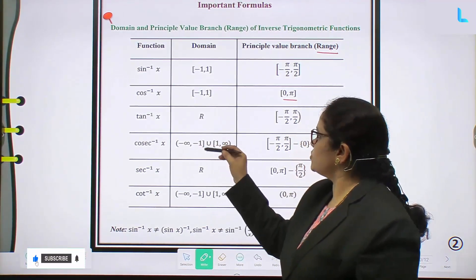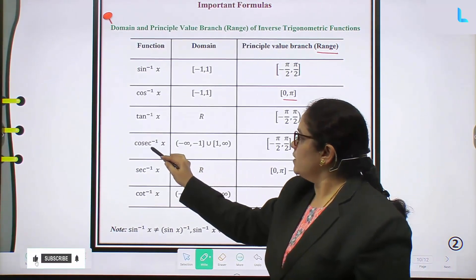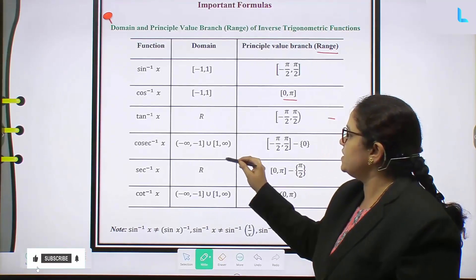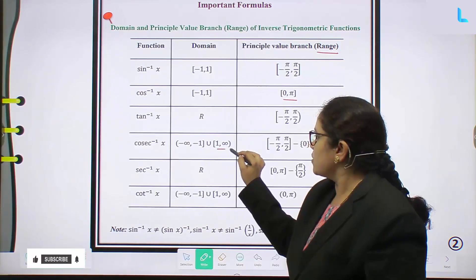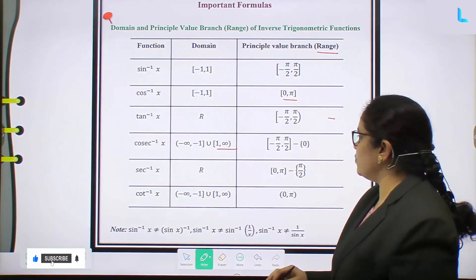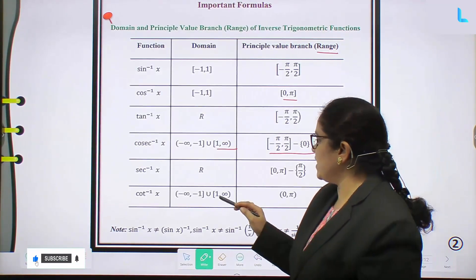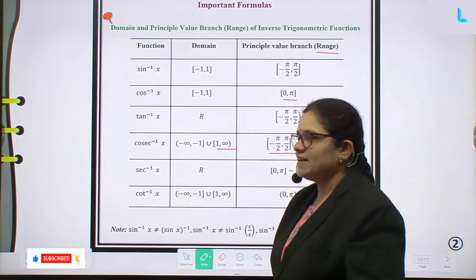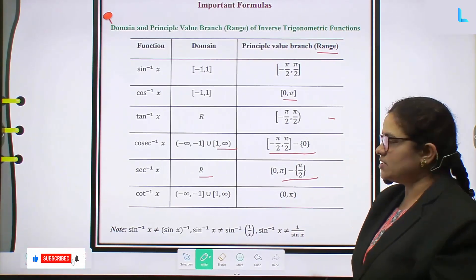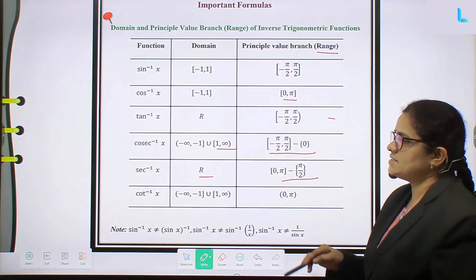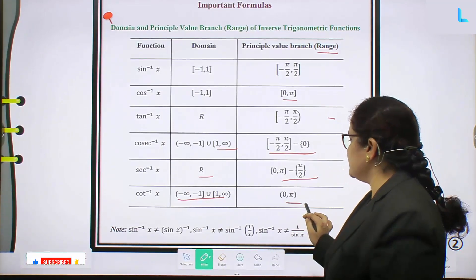Tan⁻¹x: domain is ℝ, and range is the open interval (-π/2, π/2). Cosecant inverse x: domain is (-∞, -1] union [1, ∞), and range is the closed interval [-π/2, π/2] minus singleton {0}. Secant inverse x: domain is ℝ minus (-1,1), and range is [0, π] minus singleton {π/2}. Cot inverse x: domain is ℝ and range is (0, π).